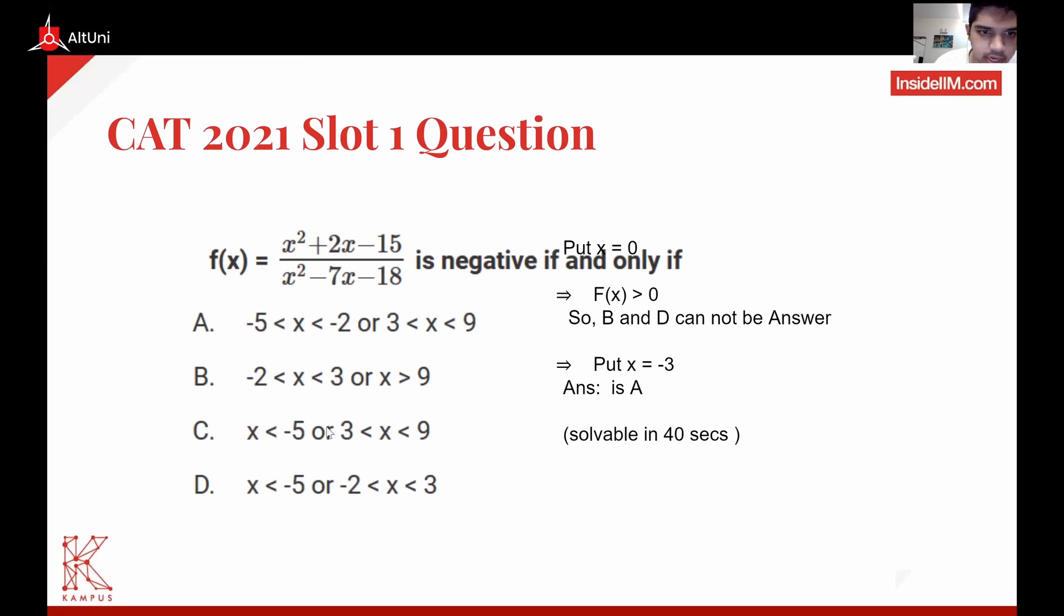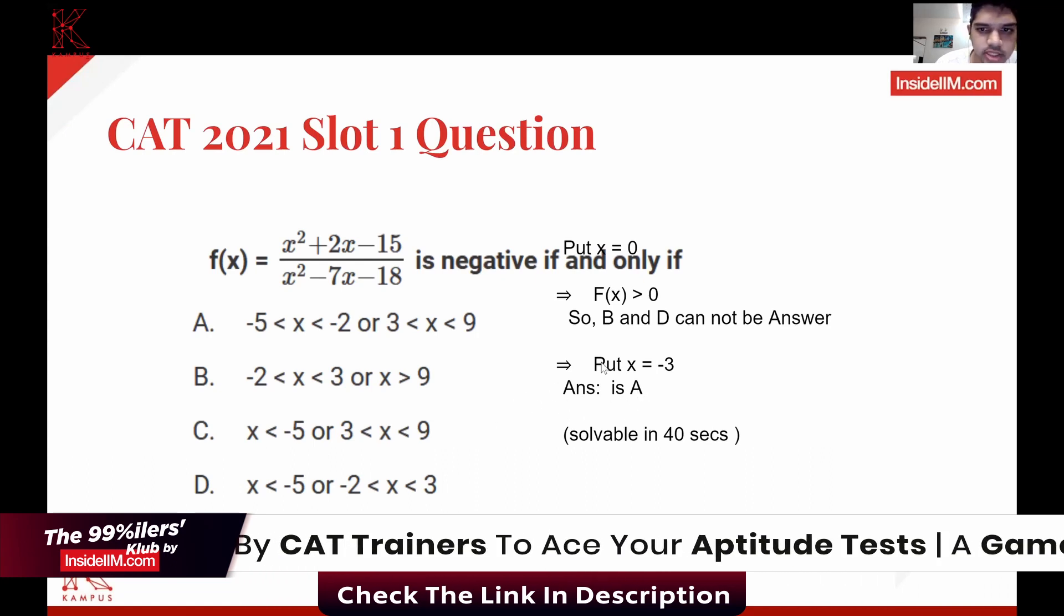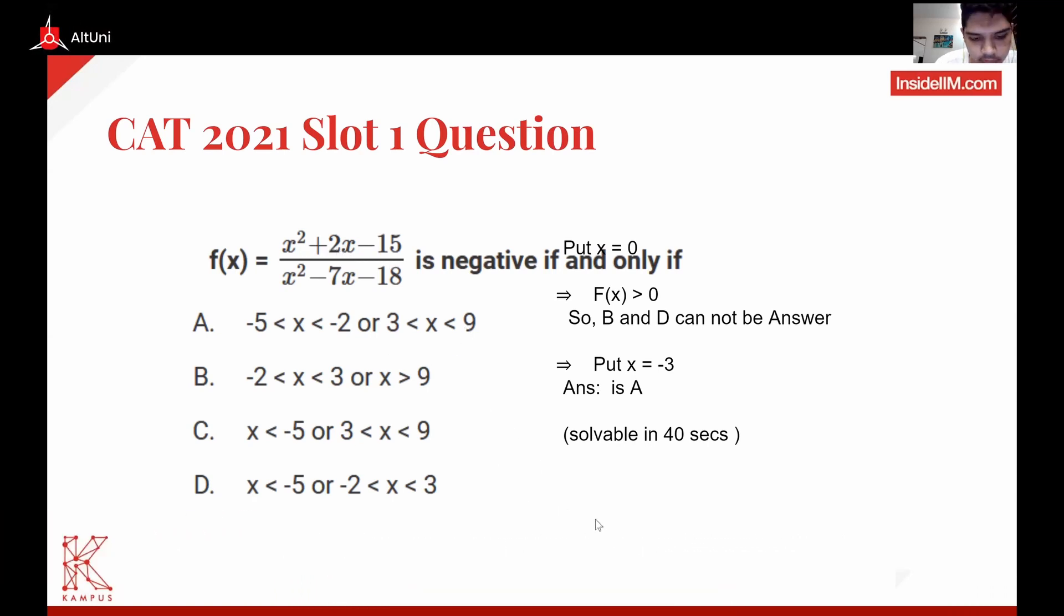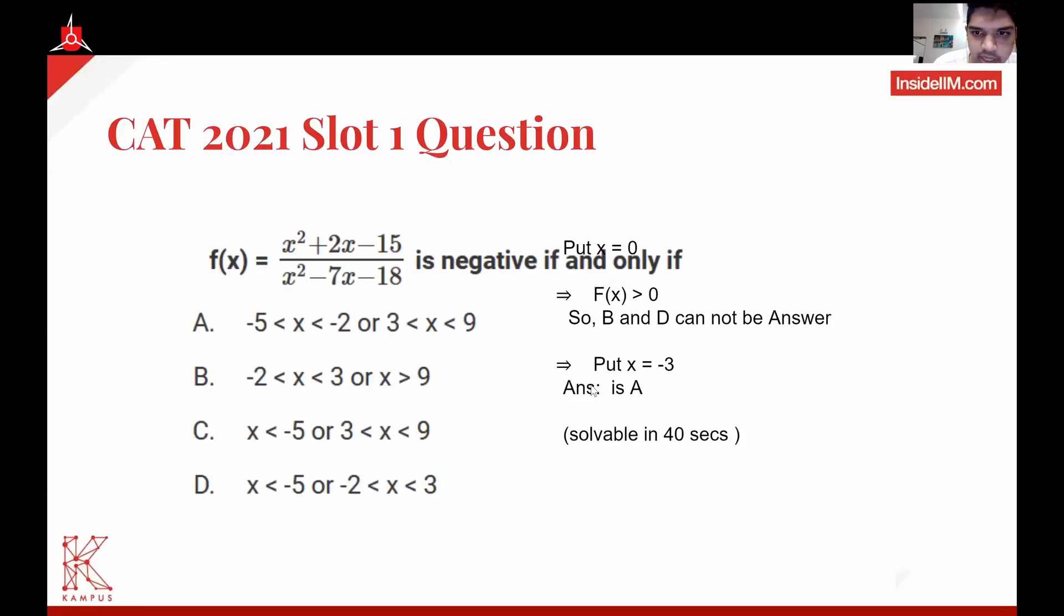Between A and C, pick any number in A but not in C. For example, take minus 3, which is included in A but not in C. Substitute minus 3: you get (9 + 9 - 6 - 15) divided by (9 + 21 - 18). That's (9 - 6 - 15) which equals minus 12 divided by something positive, so you get a negative answer.